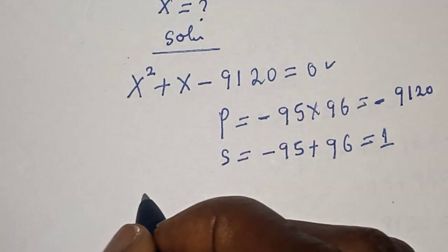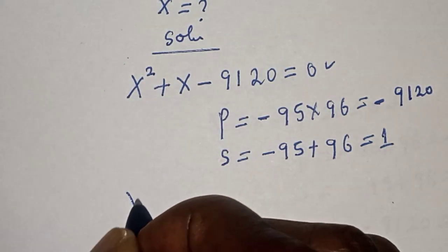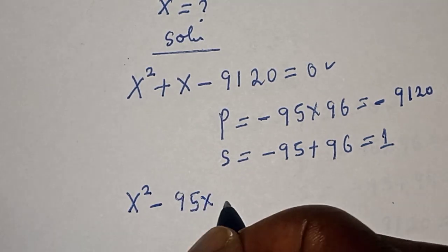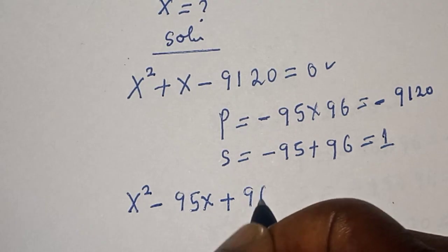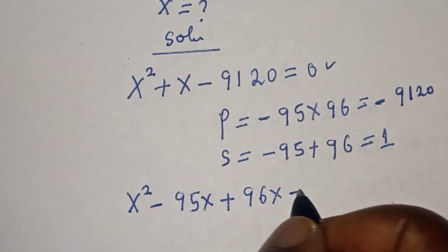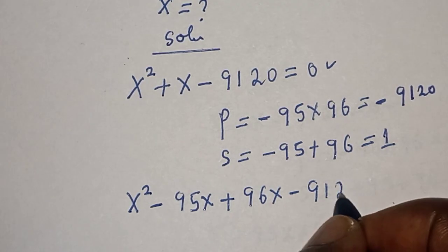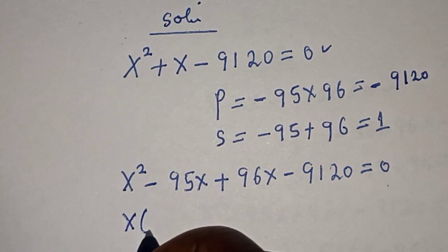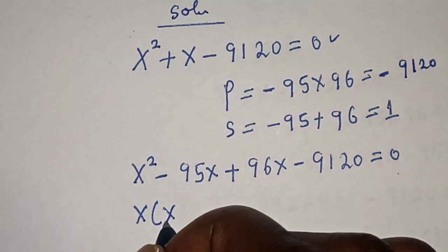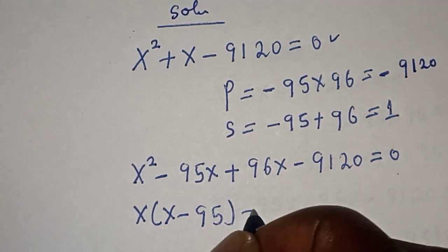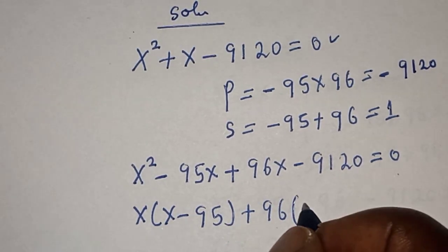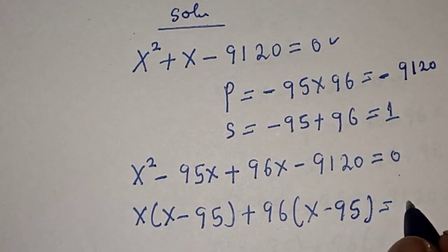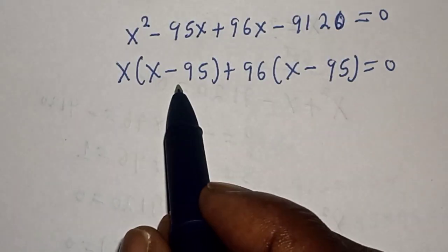Now let's substitute. We have x squared minus 95x plus 96x minus 9,120 is equal to zero. So this is x times (x minus 95) plus 96 times (x minus 95) is equal to zero.